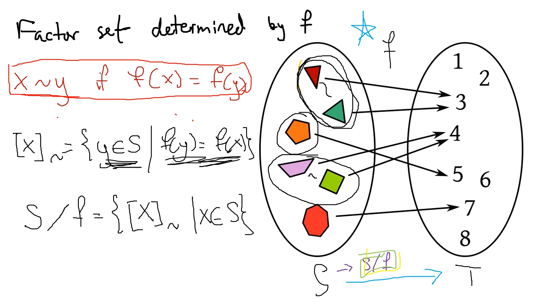Since this pentagon, I had to think about that, it's a pentagon. Since this pentagon gets mapped to five, there's nothing equivalent to it because there's nothing also mapped to five. So in the factor set, this pentagon is alone. It's considered its own thing.